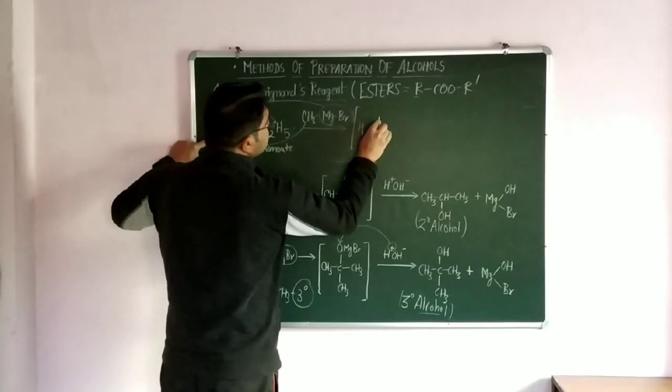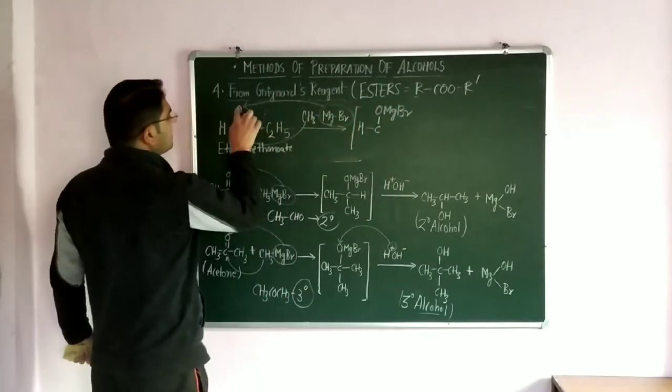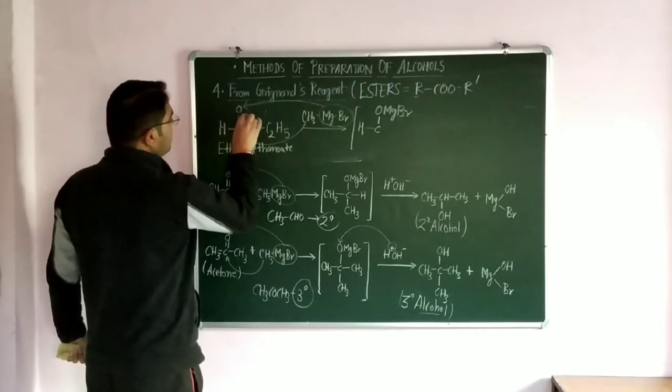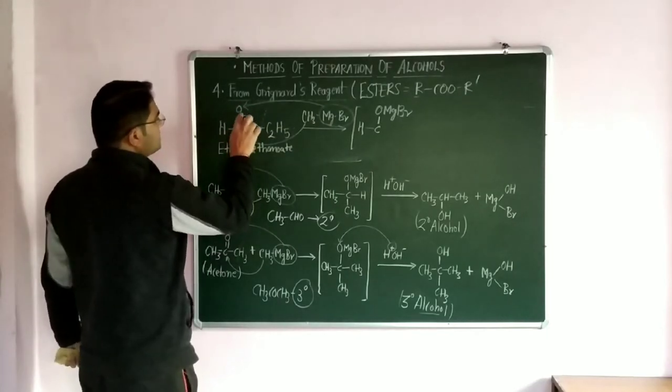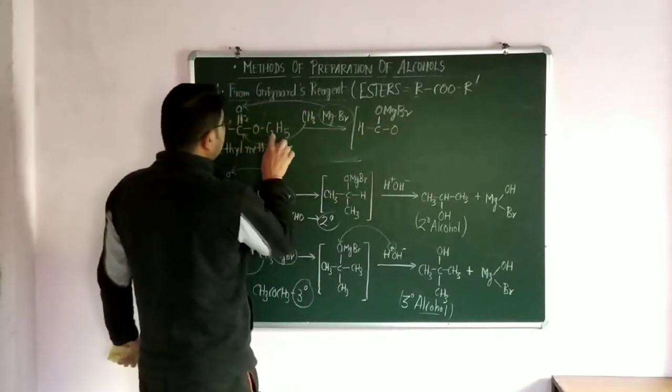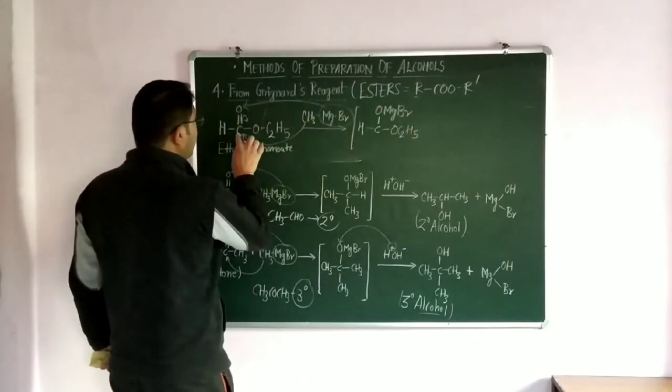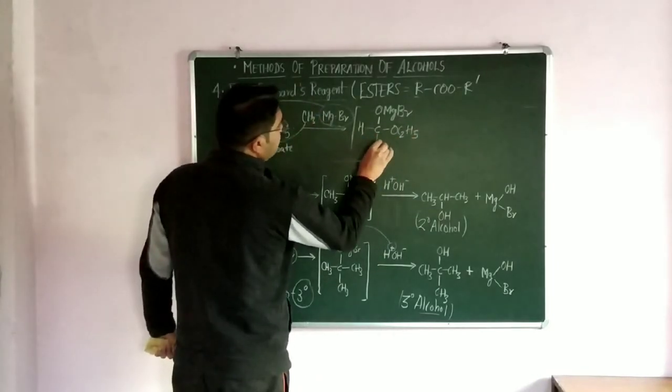MgBr is attached with this oxygen and this bond will be migrated and it will be removed. Then after, OC2H5 remains the same and this alkyl part is attached with the carbon atom.